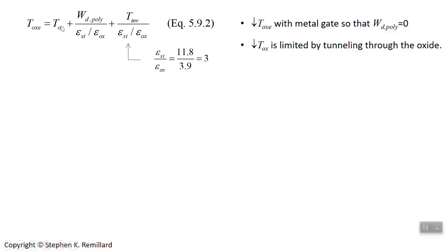There's the actual thickness of the oxide layer, the effective addition due to the depletion layer inside the gate, and the effective increase due to the inversion layer which has a thickness T inversion.